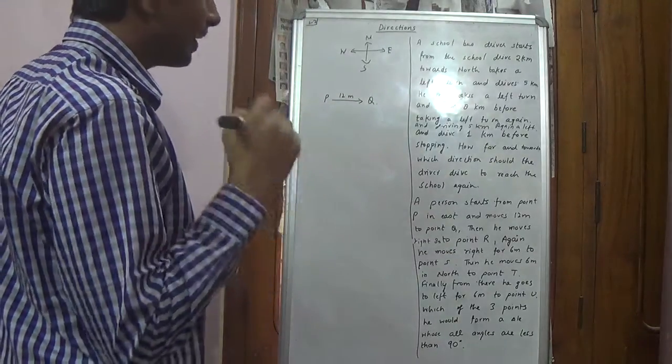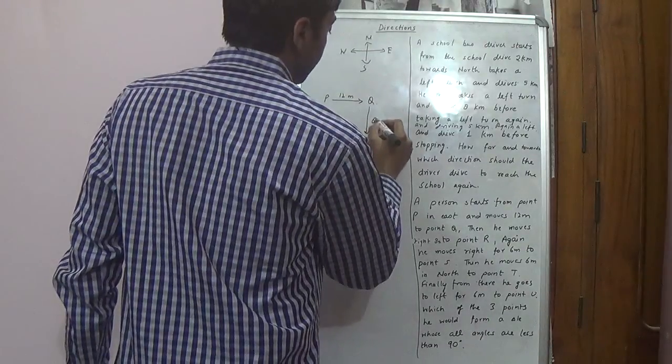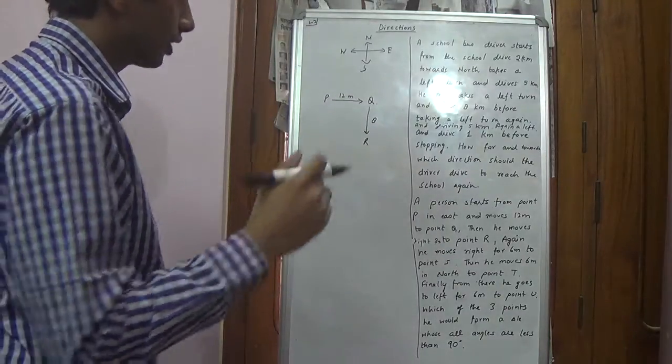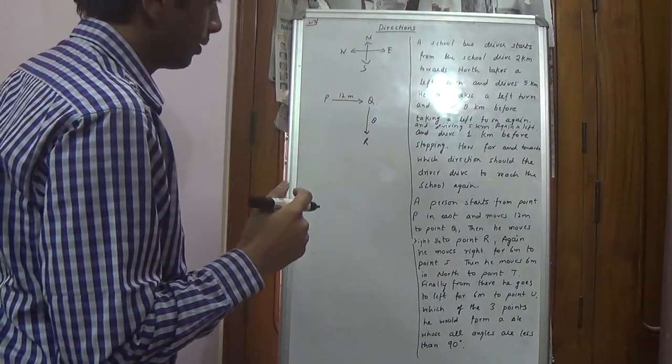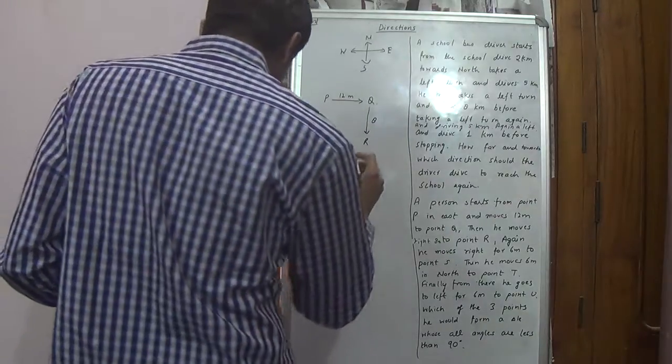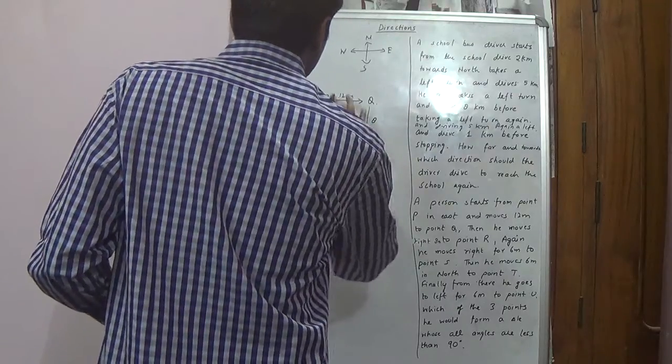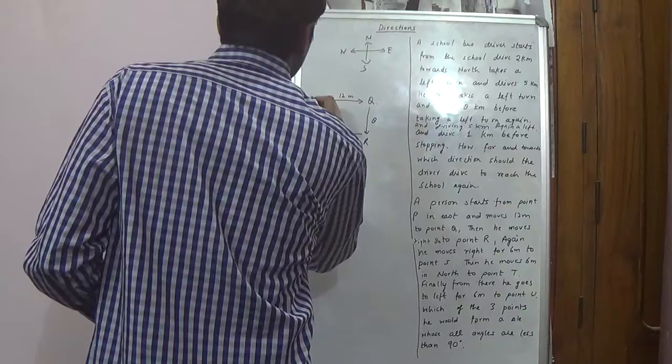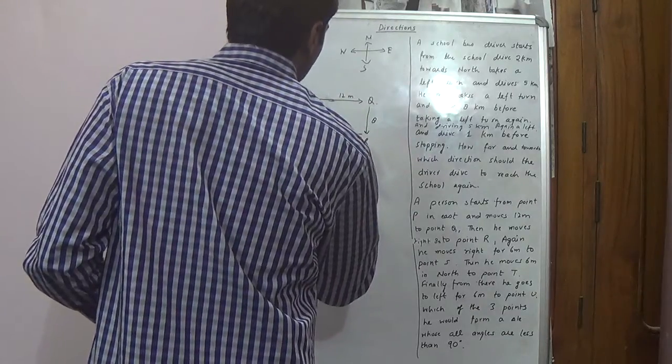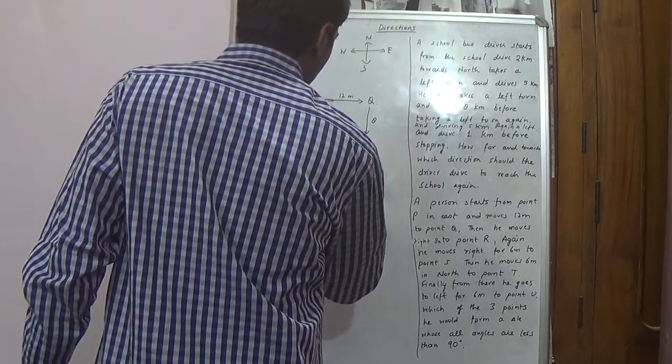Then, he moves right for eight meters to point R. Again, he moves right for six meters. P could be starting from here, the 12 meter is a little longer.